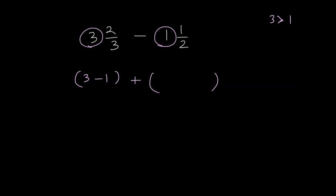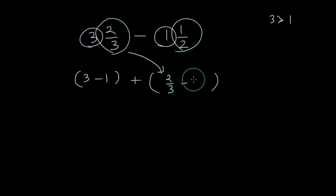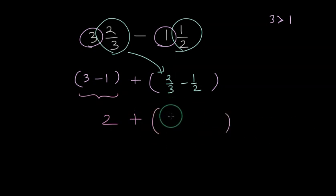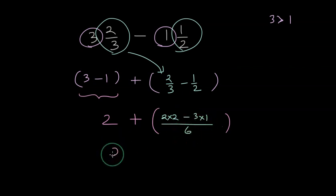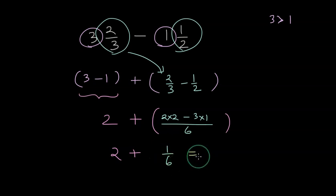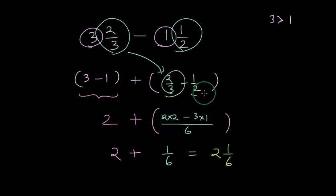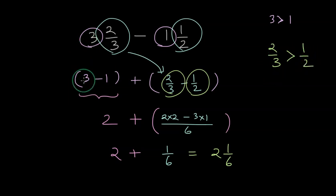So we have 2/3 minus 1/2 for the fraction part. The result of the whole part subtraction is 2. Then for 2/3 minus 1/2, if we cross multiply and perform the subtraction, we get 4 minus 3 divided by 6, which is 1/6. We can safely write this result as 2 wholes and 1/6. Note that 2/3 was also greater than 1/2 in this case, and that's why we could separately write the subtraction of whole parts as well as the fraction part.